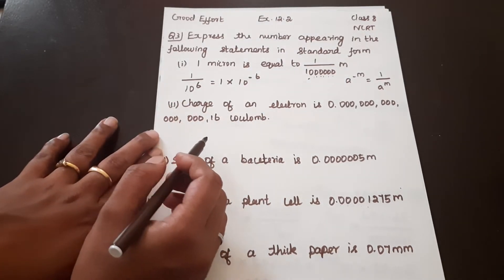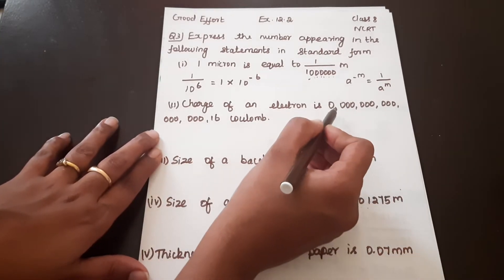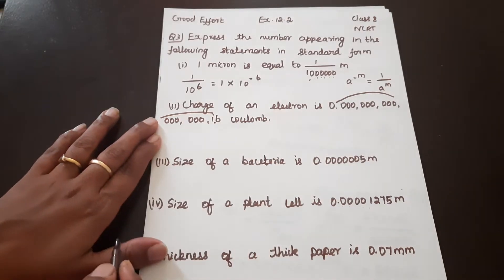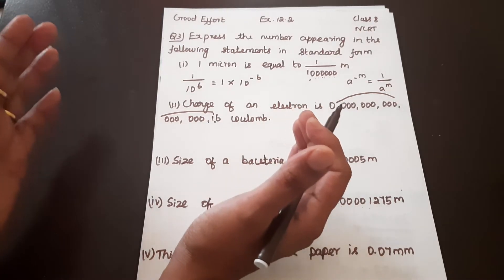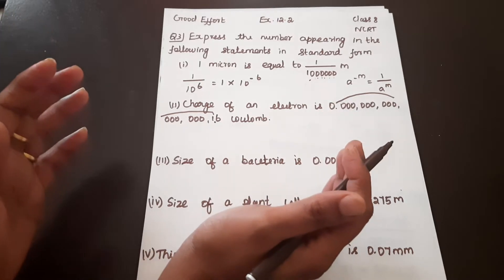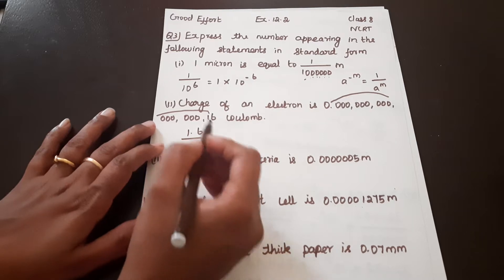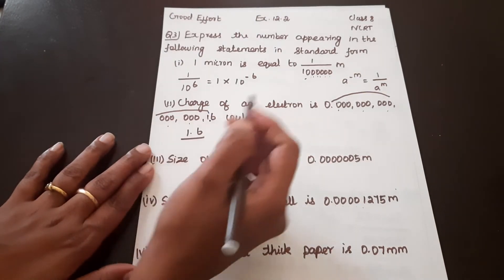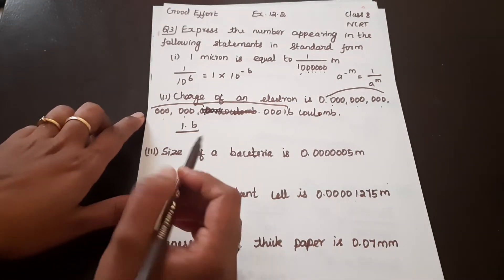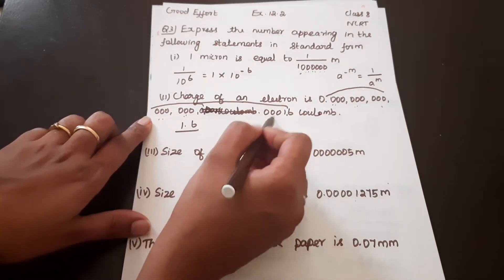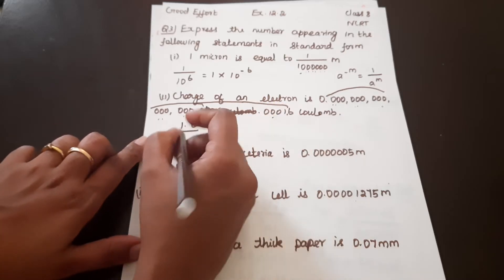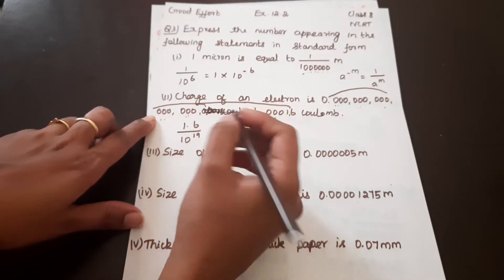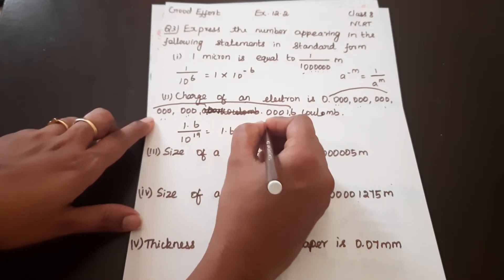Charge of an electron is 1.6. The decimal point is shifted. Counting the digits: 3, 6, 9, 12, 15, 18. So here we have 10 raise the power 19. This is a positive exponent and we need to write it as a negative exponent. So the answer is 1.6 into 10 raise the power minus 19.